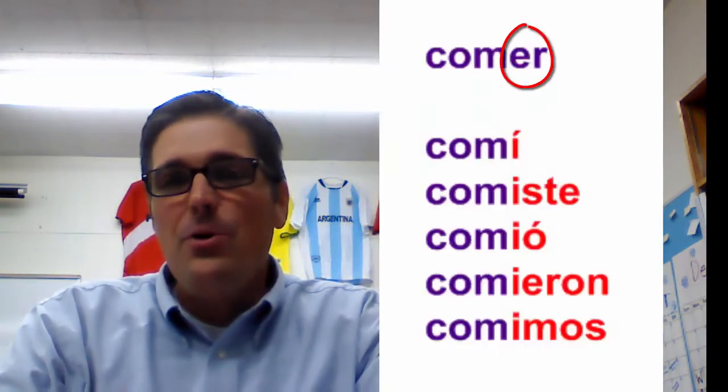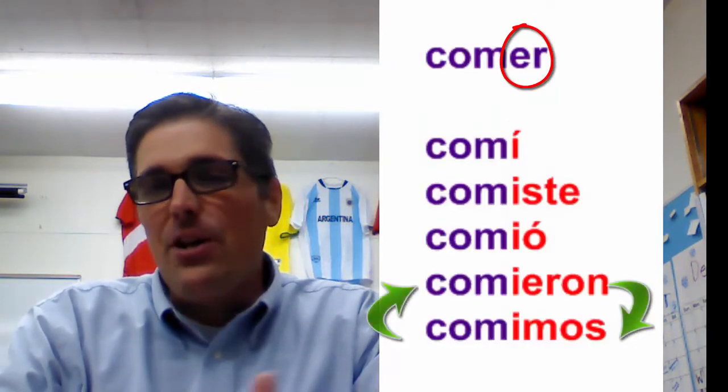Instead of o, es, e, amos, en — or o, es, e, amos, en — for ER and IR verbs, we've got í, iste, yó, imos, ieron.